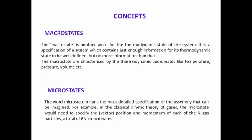Now I will discuss what is the macrostate and the microstate of a thermodynamic system. The macrostate is another word for the thermodynamic state of the system. It is the specification of a system which contains just enough information for its thermodynamic state to be well defined, but no detailed information. The macrostates of a system are characterized by thermodynamic coordinates such as temperature, pressure, and volume. So macrostate corresponds to the macroscopic property of a system.